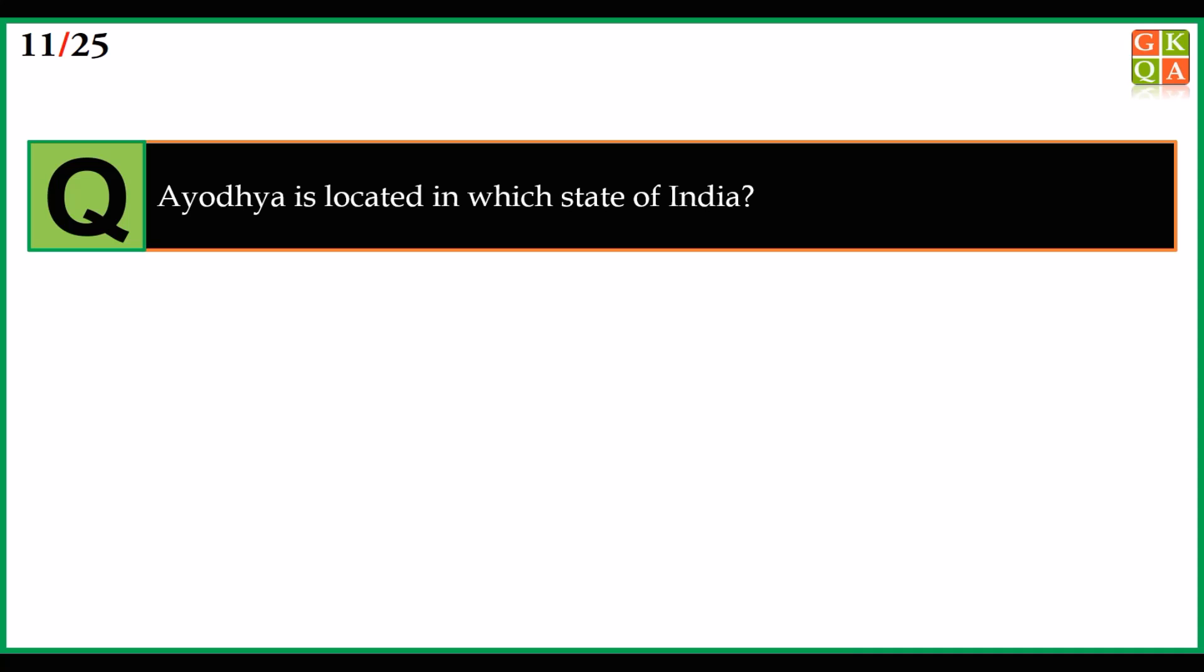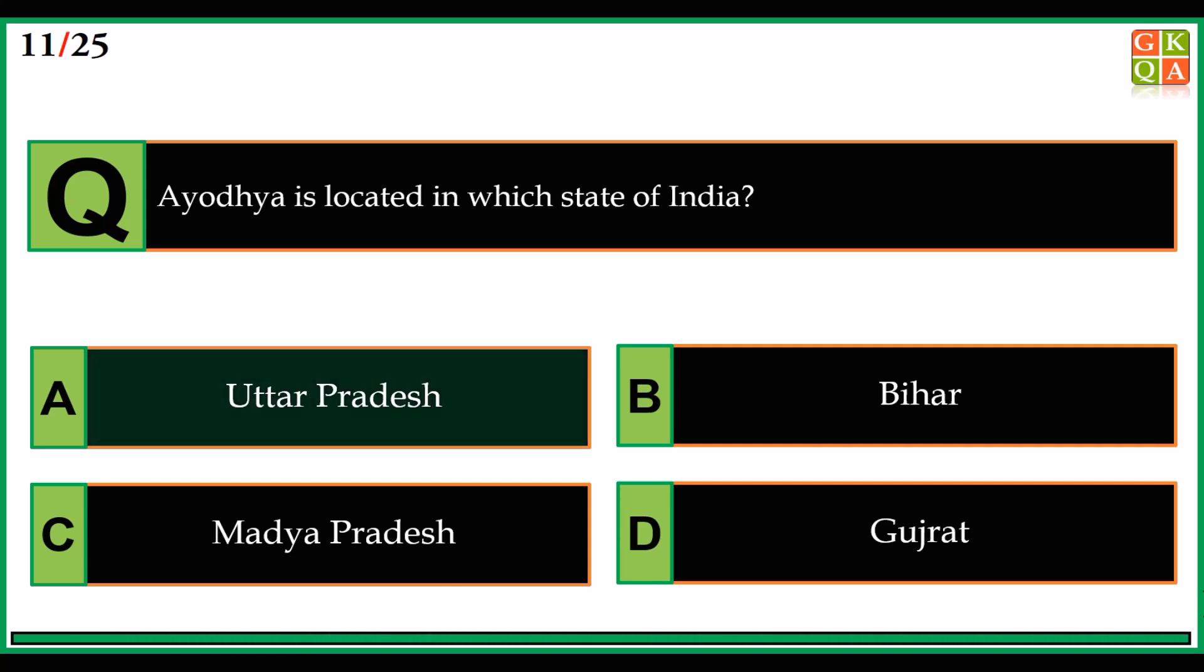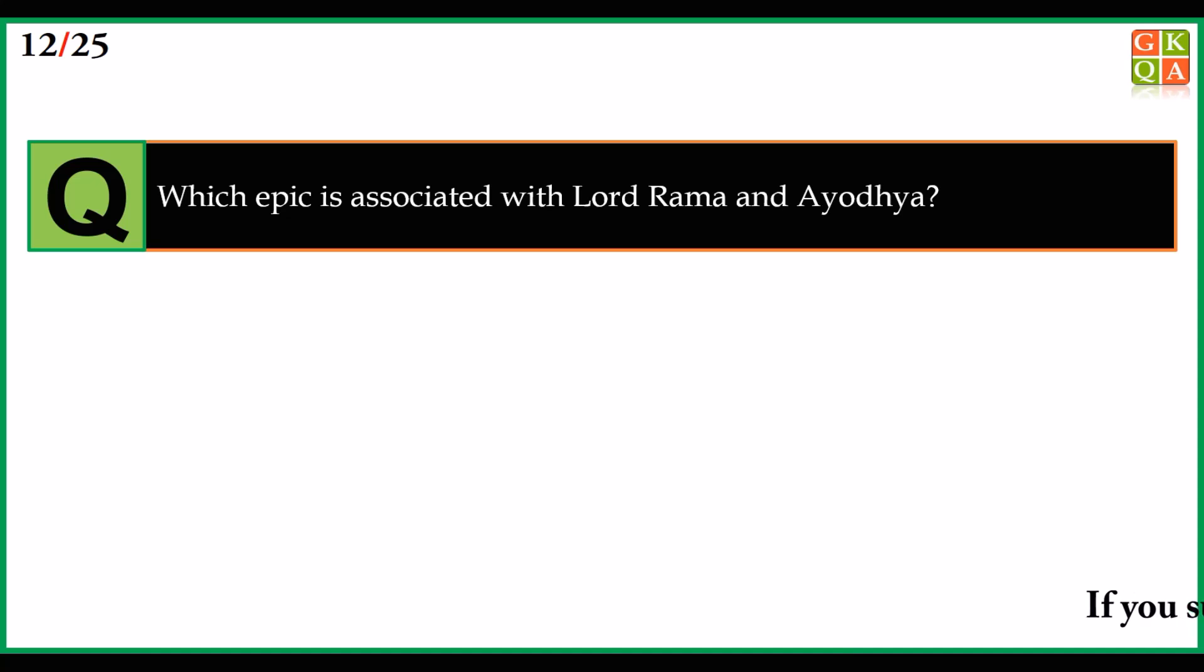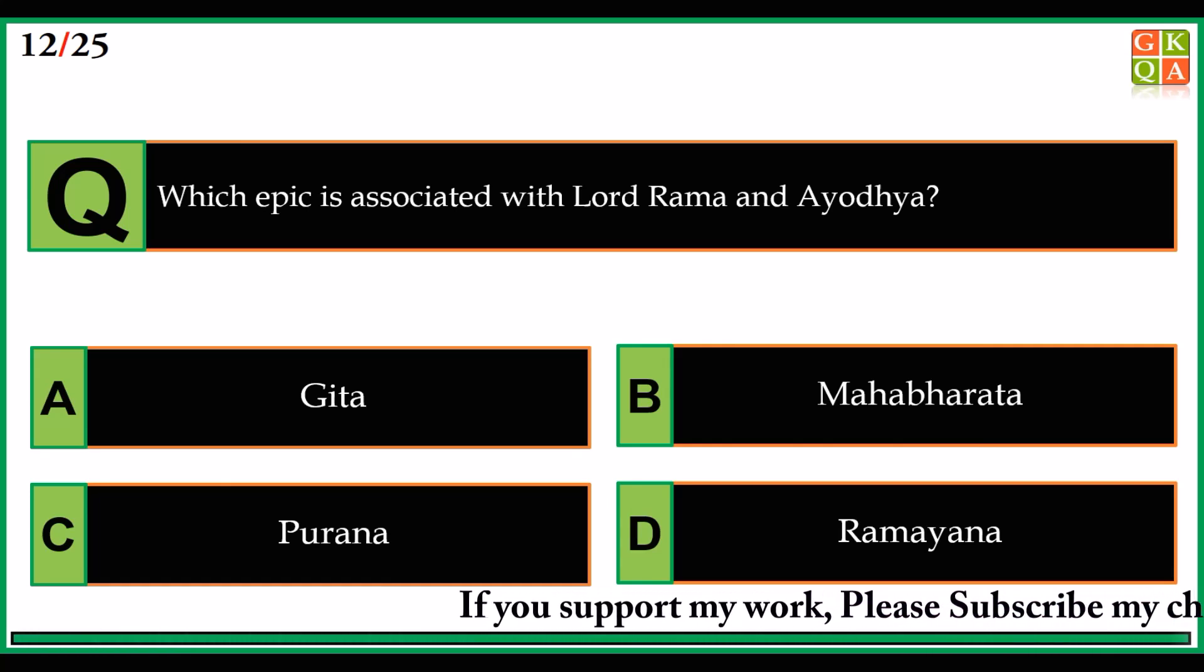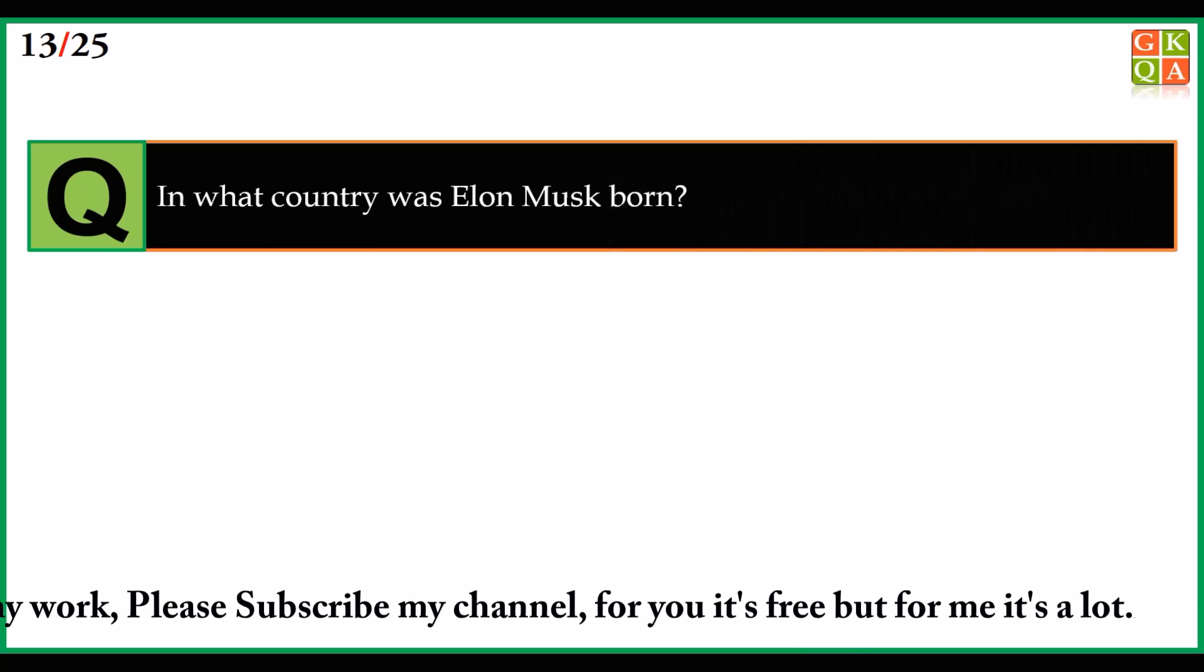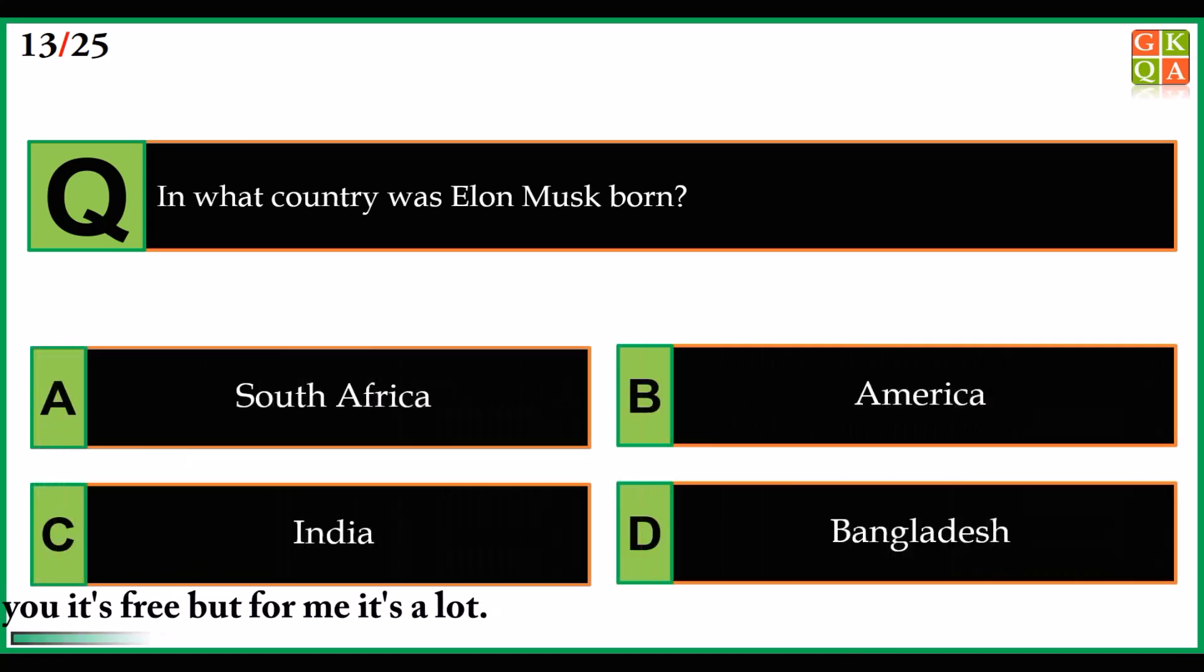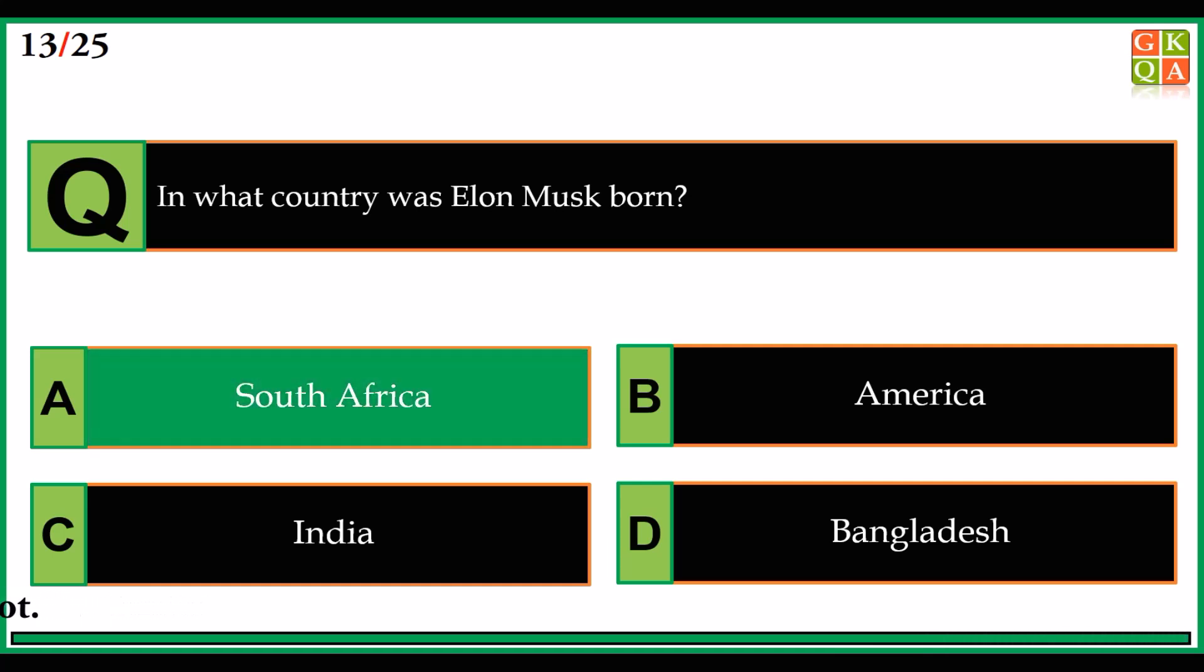Ayodhya is located in which state of India? Answer: option A, Uttar Pradesh. Which epic is associated with Lord Ram and Ayodhya? Answer: option D, Ramayana. In what country was Elon Musk born? Answer: option A, South Africa.